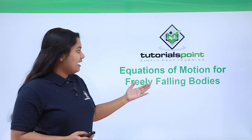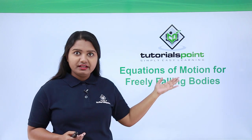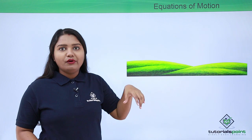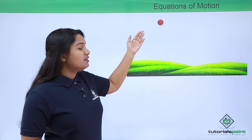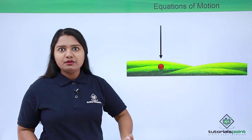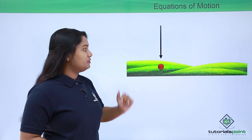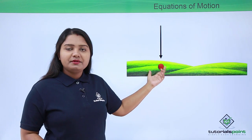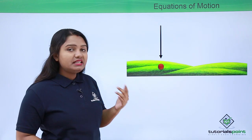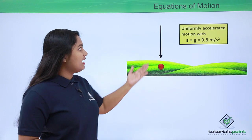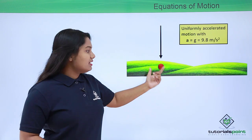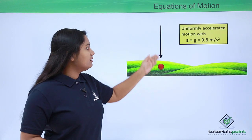In this video we are going to look at the equations of motion for freely falling bodies. We have seen in the previous video that whenever a ball or an object is dropped from a certain height it falls down because of the gravitational pull that the earth exerts onto it. This ball accelerates towards the earth with a particular acceleration called the acceleration due to gravity g, whose value is 9.8 meters per second squared.